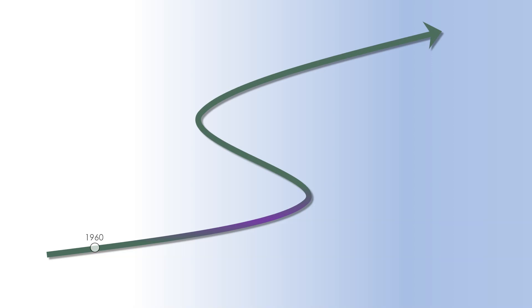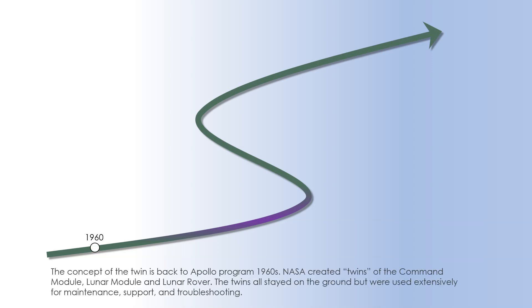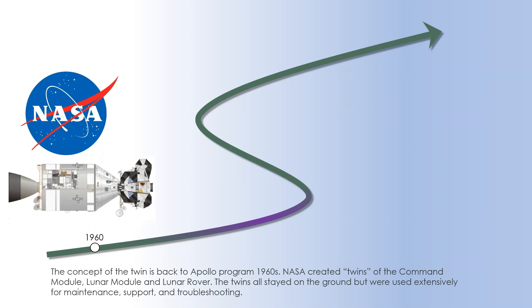The concept of the twin dates back to the Apollo program in the 1960s. NASA created twins of the command module, lunar module and lunar rover. The twins all stayed on the ground but were used extensively for maintenance, support and troubleshooting.